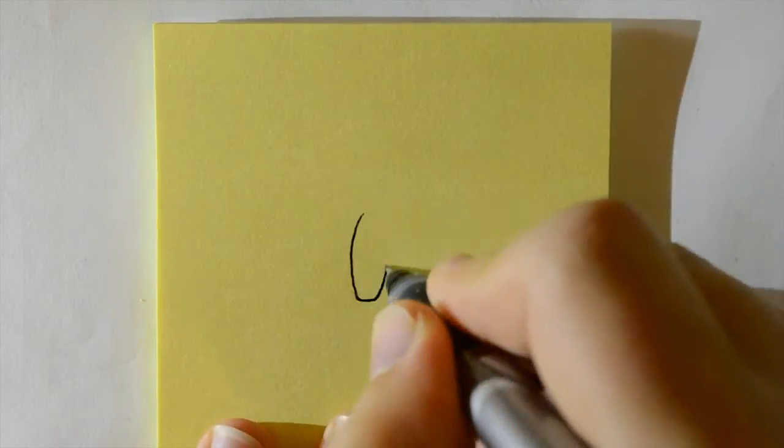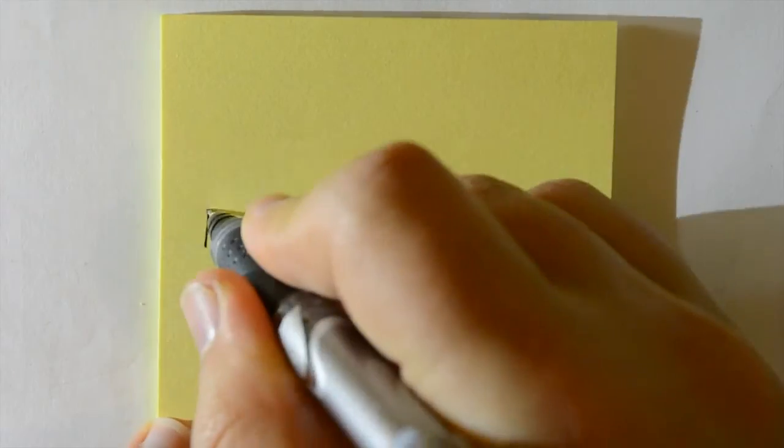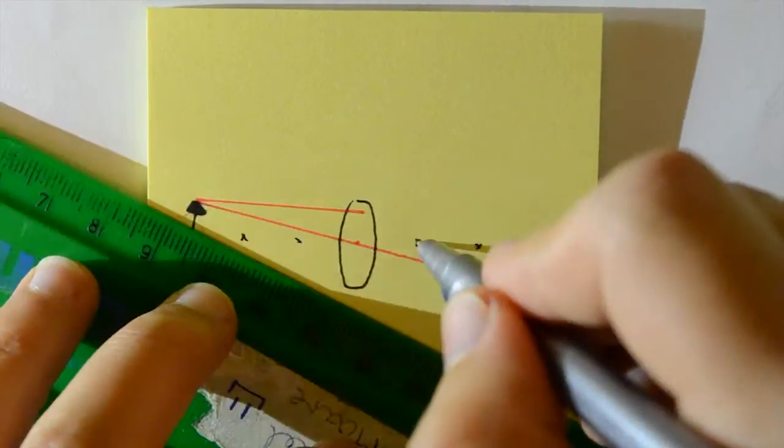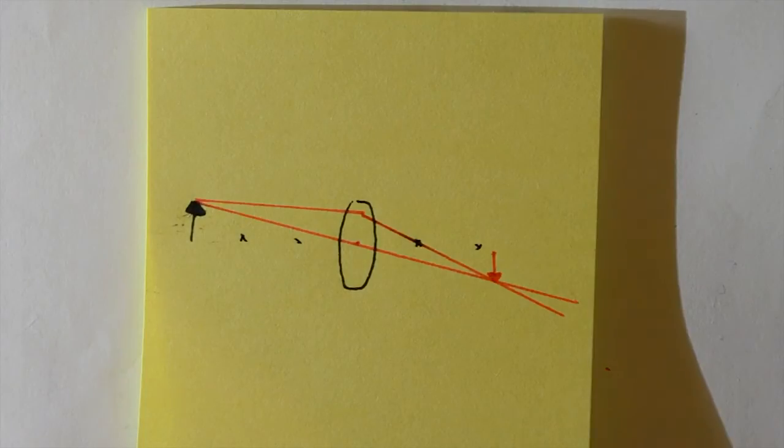Now in our final scenario, we move it more than two focal distances away, and we find that the image remains inverted, which is now smaller than the initial object.